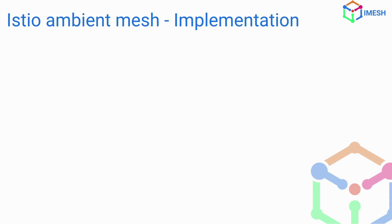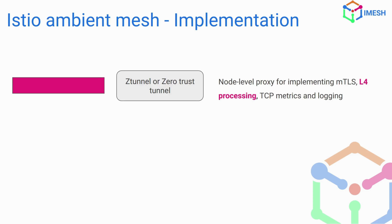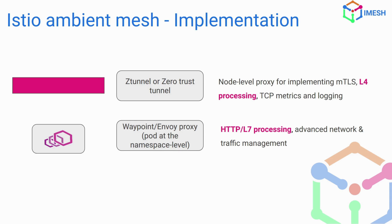Let's look at the special components in Ambient Mesh. The first is Z-Tunnel, which stands for Zero Trust Tunnel. It handles all node-level proxy implementations, MTLS, and L4 processing — anything related to L4 is done by Z-Tunnel. The second is the Waypoint proxy, which is also based on Envoy and is deployed per namespace or service account level. All L7 capabilities — L7 processing, networking, traffic management, metrics, and logging — are handled by the Waypoint proxy.